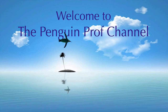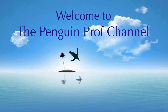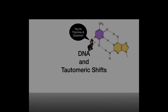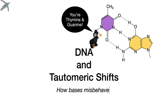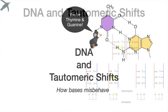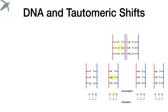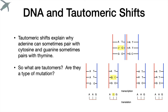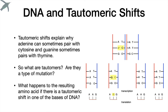Hello, and welcome to the Penguin Prof Channel. In today's episode, we are going to tackle tautomeric shifts. That's the explanation for why sometimes nucleobases misbehave. You can get adenine pairing with cytosine, for example. We've got to talk about tautomers, and we're going to talk about what happens when you have a tautomeric shift.